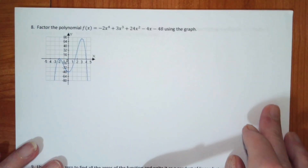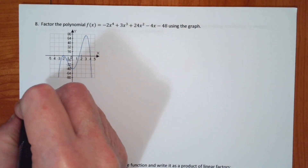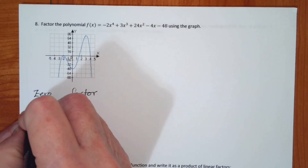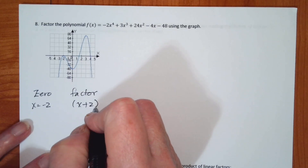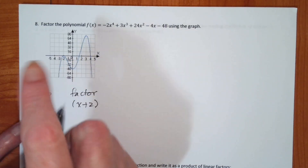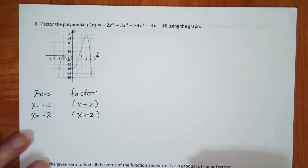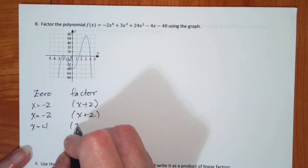On number 8, it's asking us to factor using the graph. The graph tells us what our zeros are, and from there I can find factors. I have a zero of x equals negative 2, so that's a factor of x plus 2. But this has a multiplicity of 2, so I have another zero at x equals negative 2, giving me another factor of x plus 2. I also have a zero of x equals 4, which means I have a factor of x minus 4.